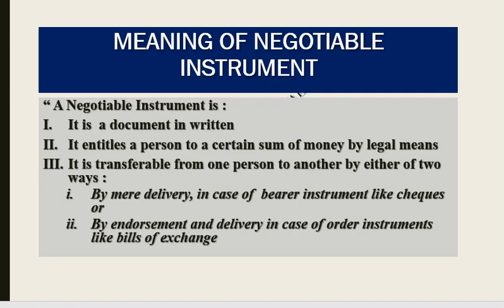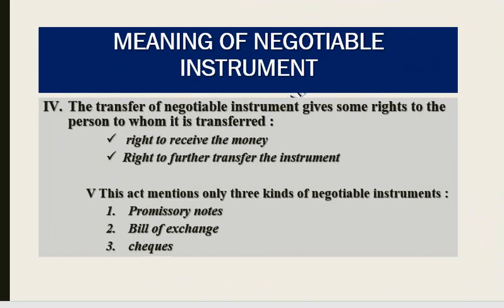If it is a bearer instrument, we can transfer it by mere delivery. But if it is an order instrument — which has the name of the payee — then it requires endorsement plus delivery to transfer it. When we transfer a negotiable instrument to another person, we transfer the rights: the right to receive the money, and the right to further transfer the instrument. The act specifies three kinds of negotiable instruments: promissory notes, bill of exchange, and cheques.